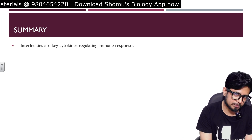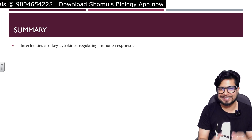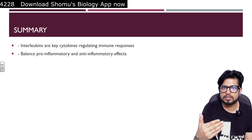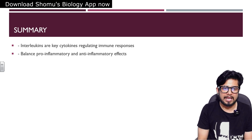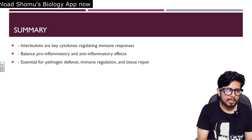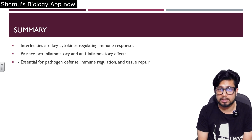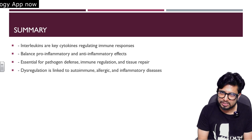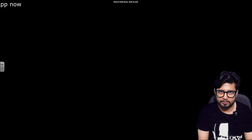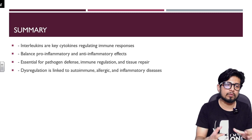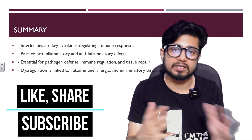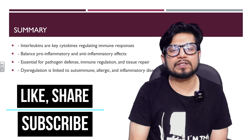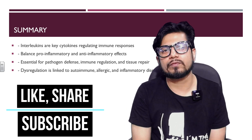In conclusion, interleukins are key cytokines regulating immune responses — either activating or inhibiting the response. There is a balance of pro-inflammatory and anti-inflammatory cytokines: pro-inflammatory cytokines enhance the immune response while anti-inflammatory cytokines decrease it. They are essential for pathogen defense, immune regulation, and tissue repair. Dysregulation is linked to autoimmune disorders, allergic reactions, and inflammatory diseases. If you want more detail on cytokines and chemokines, watch the dedicated video on that topic. Please like, share, and subscribe.